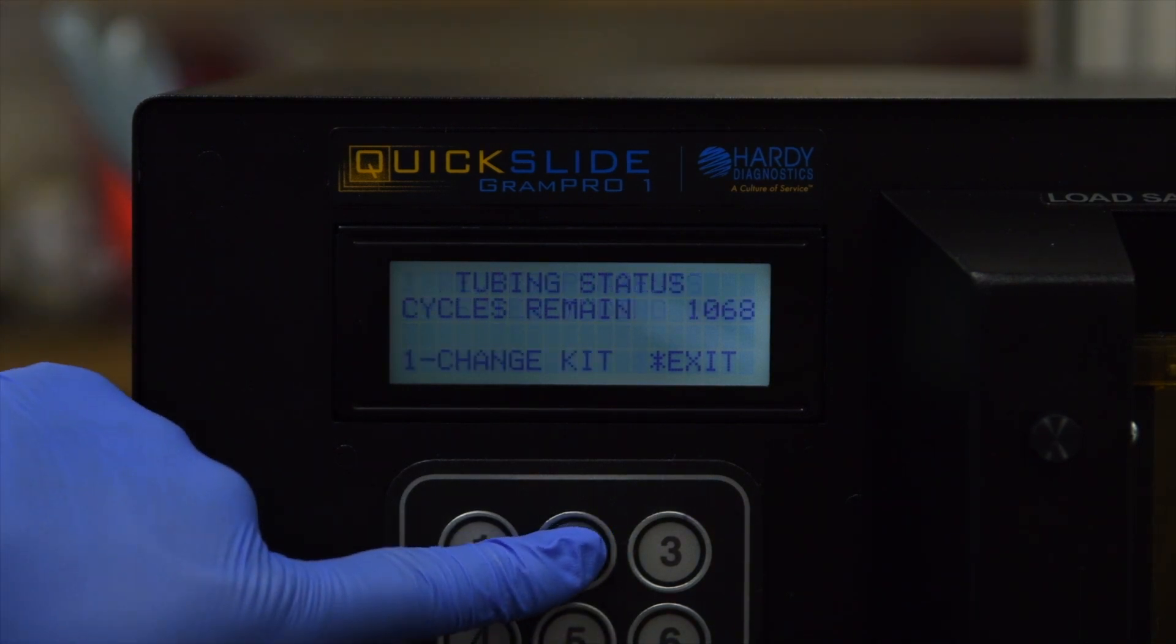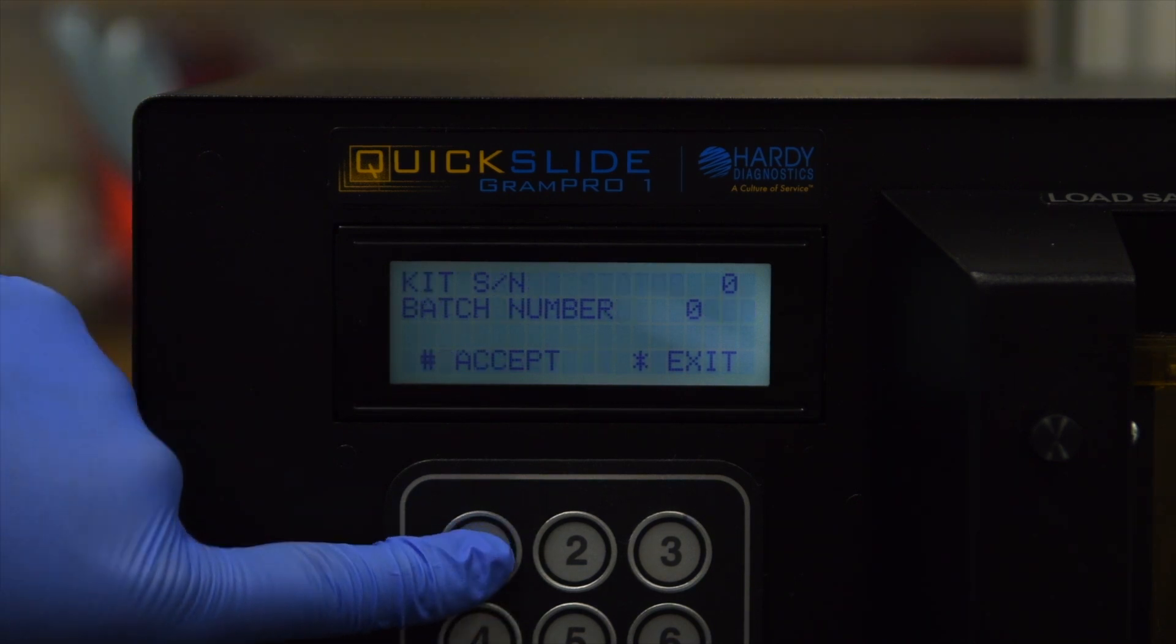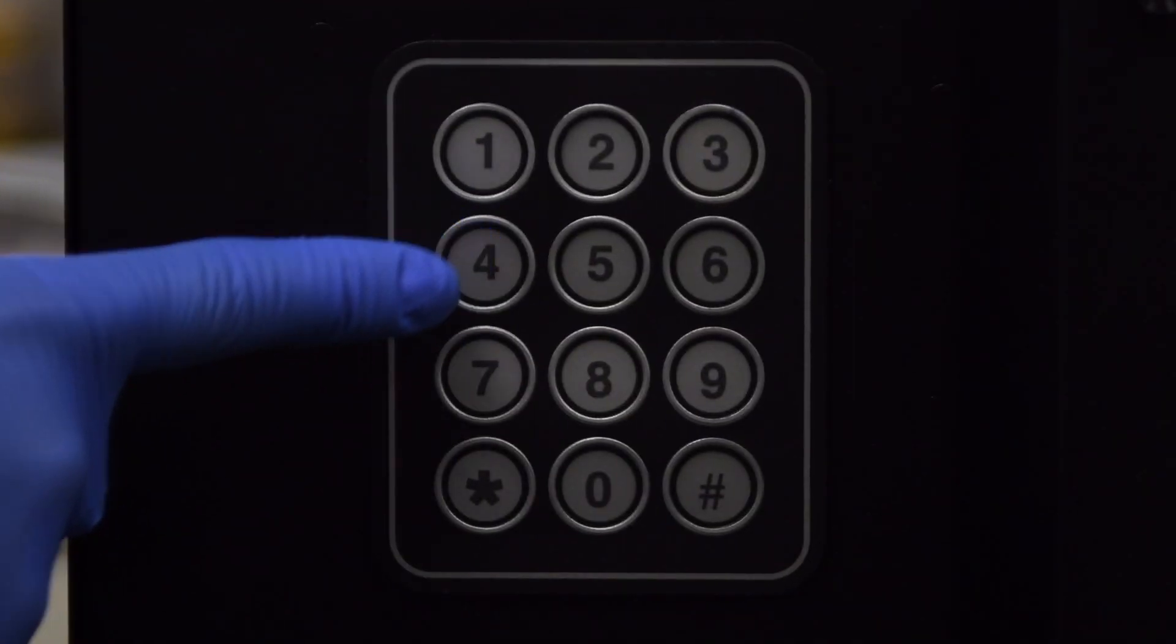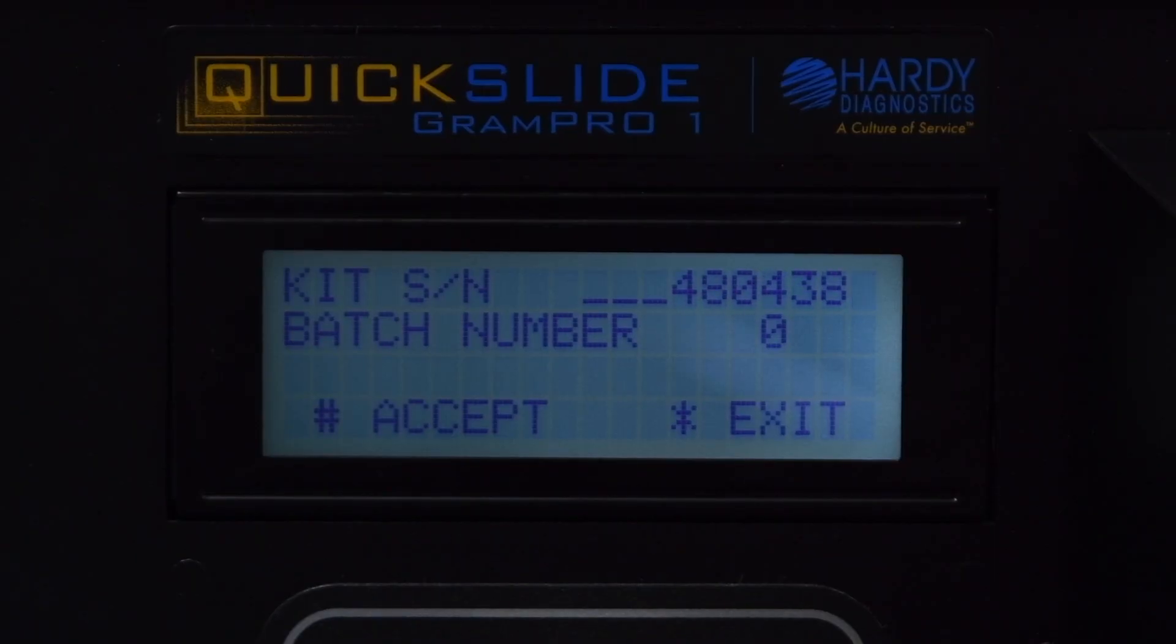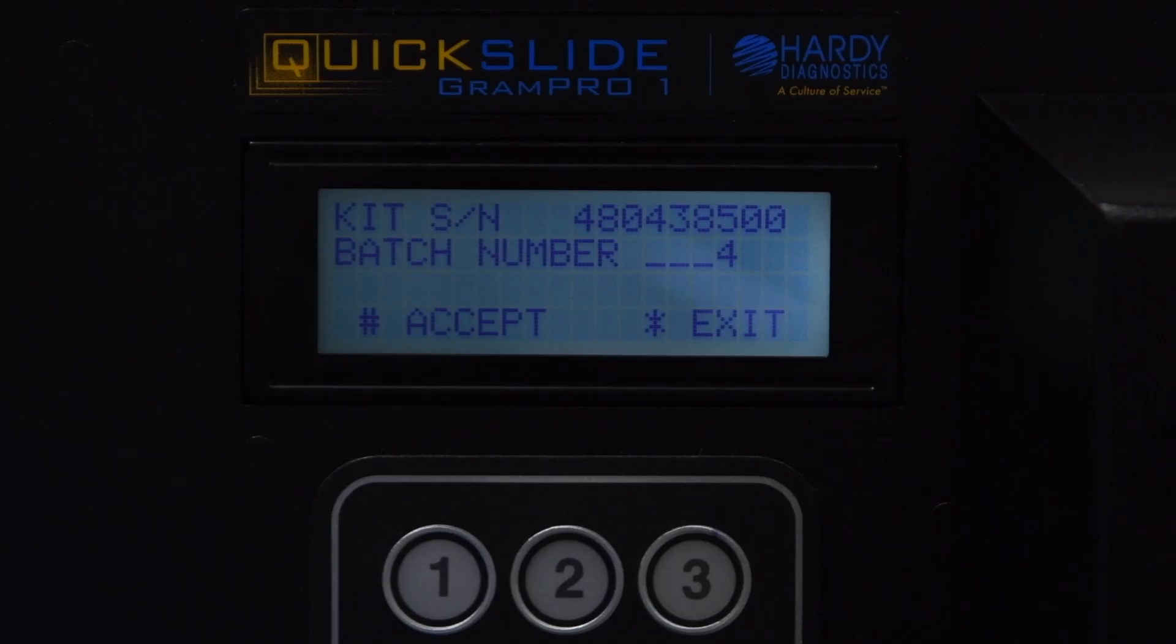Press 2 again to select Review Tubing. Press 1 to select Change Kit. Enter the kit serial number and press the pound key to accept. Enter the kit batch number and press the pound key to accept.